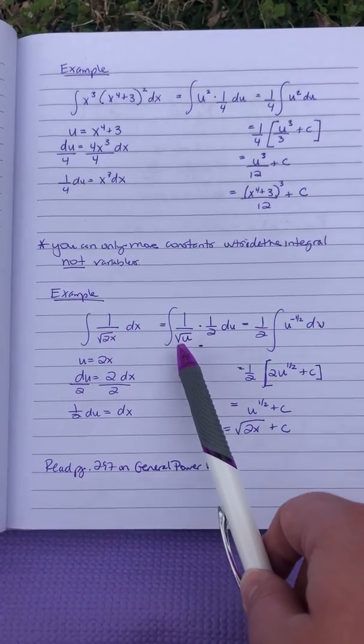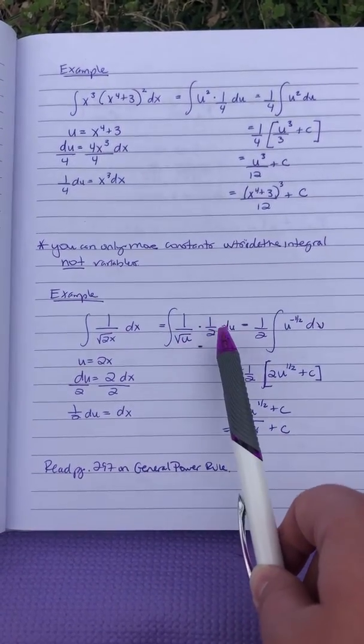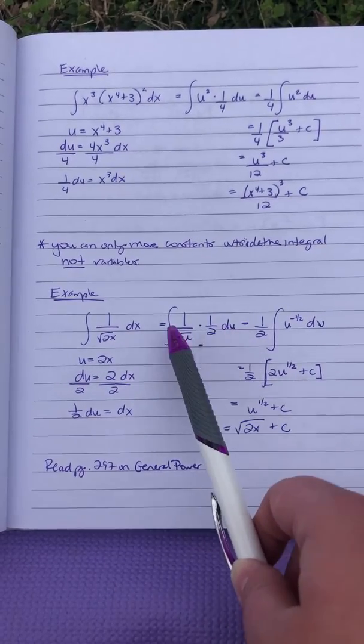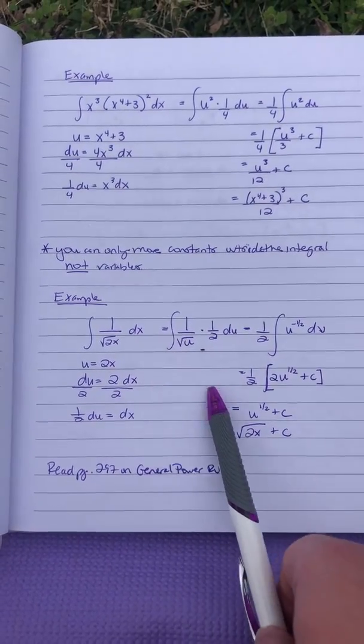All right, so this becomes 1 over the square root of u times, and then you're going to have one half du to take care of that dx.